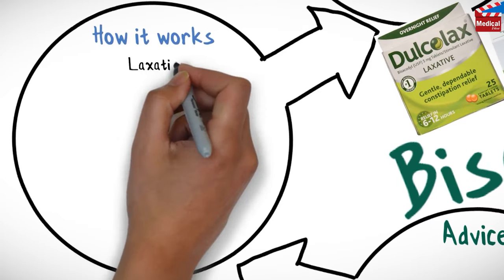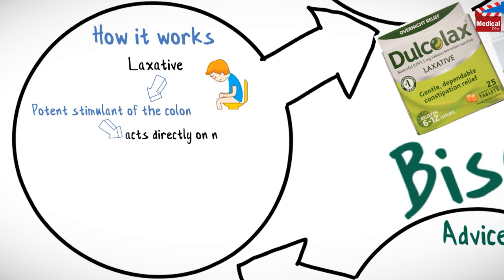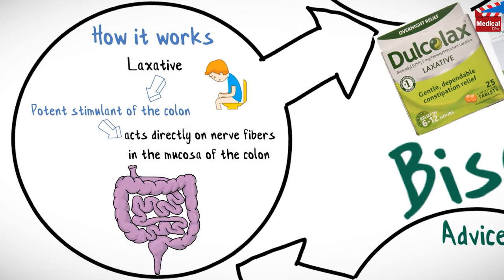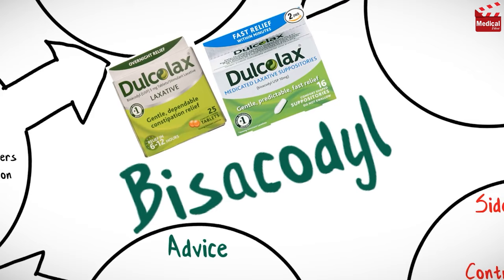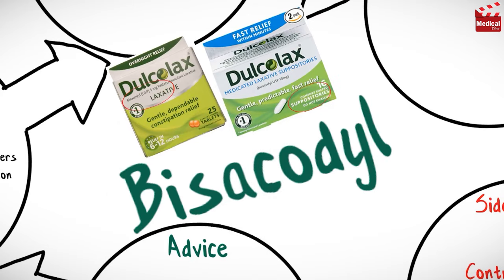Bisacodyl is a laxative. It is a potent stimulant of the colon, as it acts directly on nerve fibers in the mucosa of the colon. It is available as 5 mg enteric-coated tablets and 10 mg suppositories.